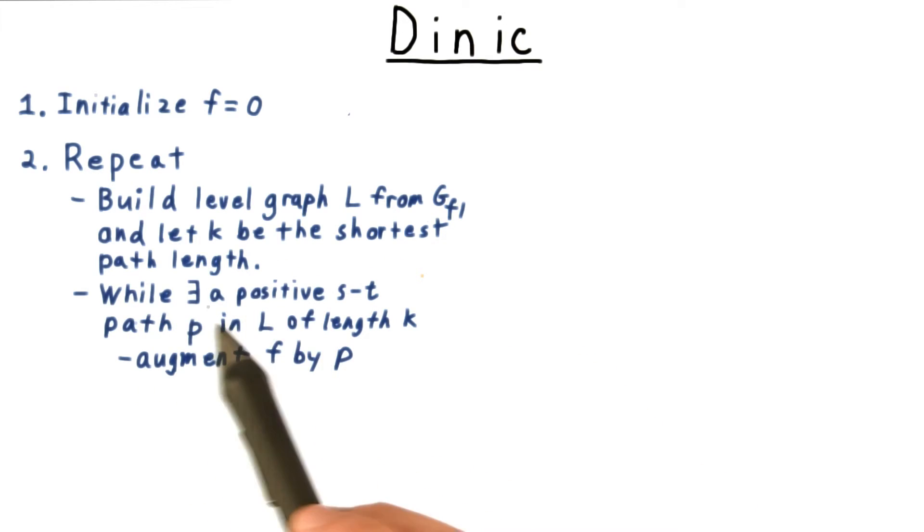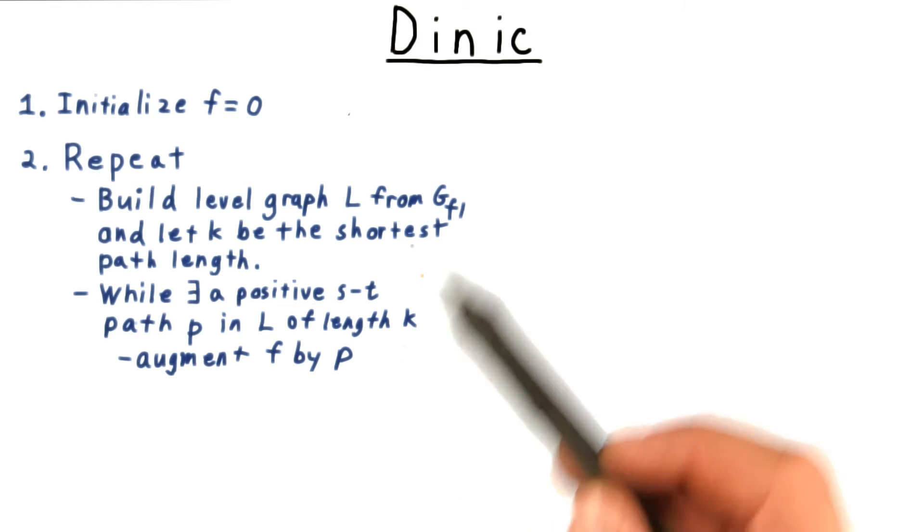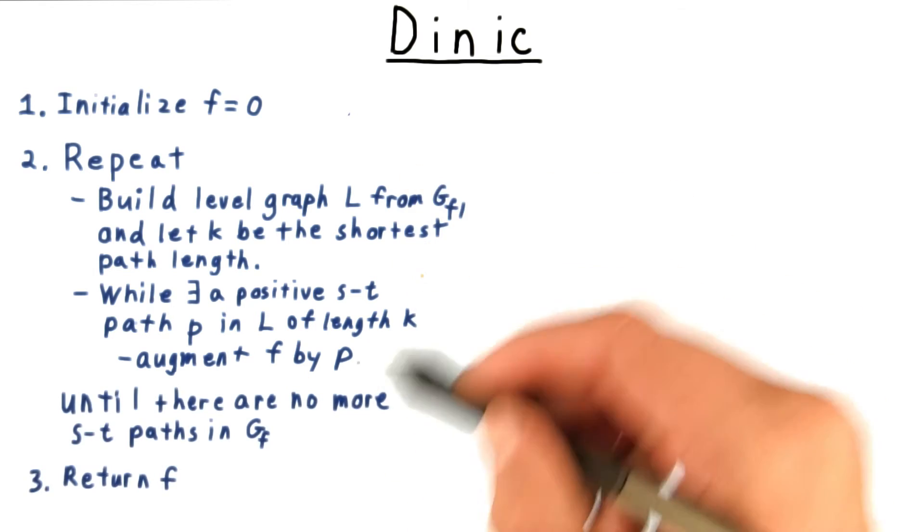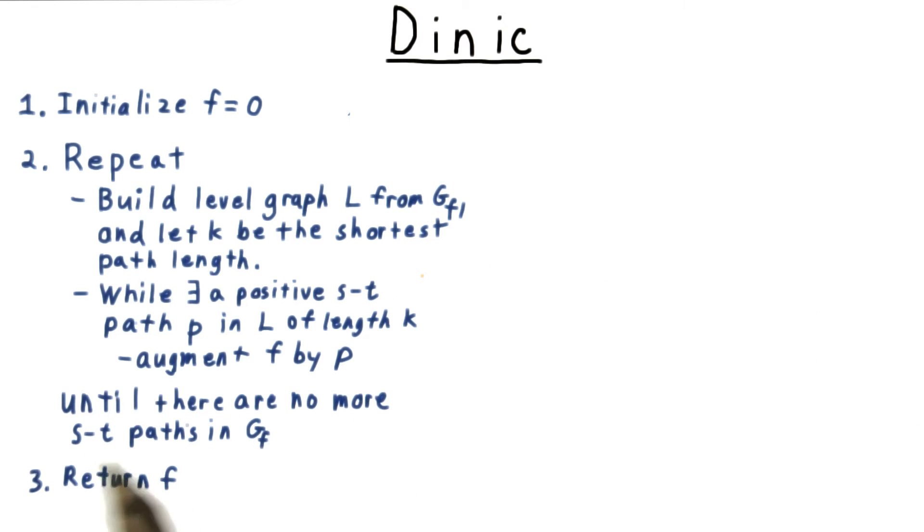Then, while there's a path from source to sink in the level graph that has length K, we'll augment the flow along that path, and then update the residual capacities. And we repeat this until there are no more ST paths in the residual network.